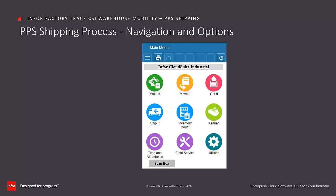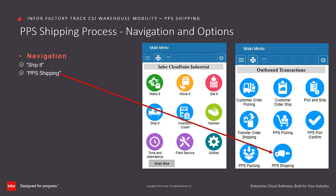To start the PPS shipping process, from the FactoryTrack Warehouse Mobility main menu click on the Ship It icon. This then navigates to the outbound transaction screen where you click on the PPS Shipping icon.